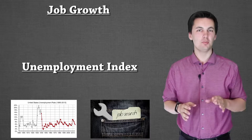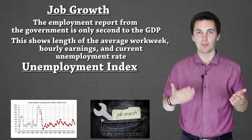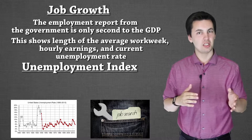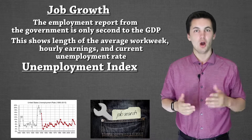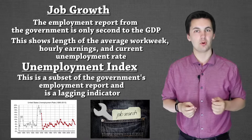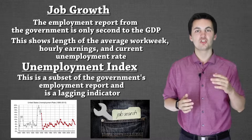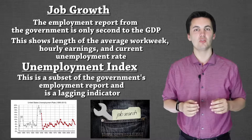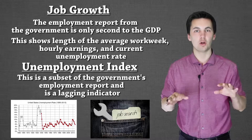Our last two economic indicators are the job growth report and the unemployment index. These are really important because they show what's happening with the private sector. Are we seeing an increase in jobs, meaning more people are getting hired and making money? Companies hiring more normally means they're doing well — if a company is doing poorly, they're not going to hire more people because that adds costs. We also look at whether unemployment is low or rising. If unemployment is on the rise, people are being laid off, they won't have money to spend, which decreases company profits and forces even more layoffs. Both reports give us a good understanding of what's going on with consumers and the private sector.